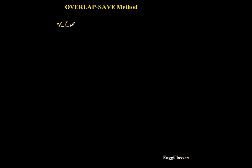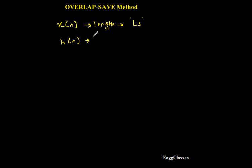First, in any numerical, the input x of n and the impulse response h of n are given. The length of x of n I represent using the letter ls — I call it ls. The length of h of n, the impulse response, I denote using the letter m. So ls is the length of the input sequence x of n, and m is the length of the impulse response h of n.